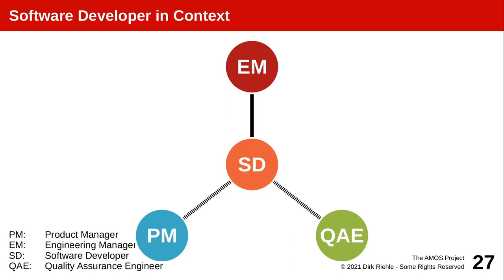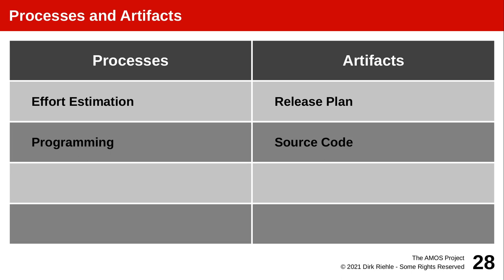Software developers are a bit more focused than engineering managers and product managers in their communication, but they are also social beings who communicate mostly with their engineering manager, and also with product managers and quality assurance engineers. In general, they mostly program, help with effort estimation, and help the engineering manager.